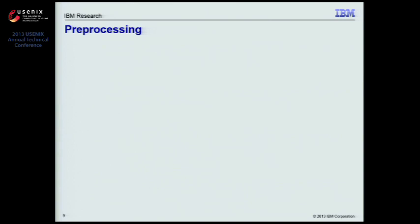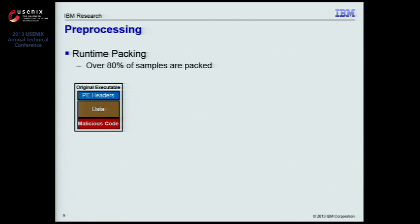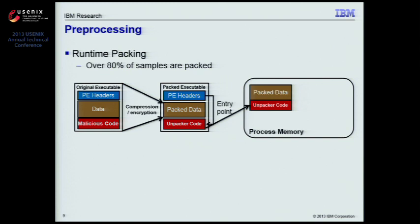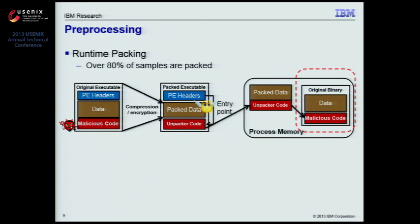The first step of MaltonX is preprocessing, which focuses on handling the runtime packing problem. Runtime packing is arguably the most popular technique used by malware authors to evade detection — it has been estimated that over 80% of malware samples are packed. A typical packer takes original executable binaries, compresses or encrypts them into random-looking data, and creates a new binary executable containing this packed data followed by unpacker code. When this packed binary is executed, the unpacker code first runs, decompresses or decrypts the original binary into memory, and then jumps to the original malicious code for execution. In this way, packing allows malware programs to hide their malicious code as innocent-looking data while keeping their original functionality intact.